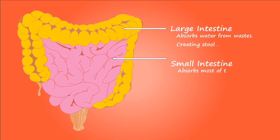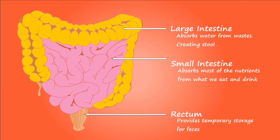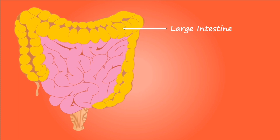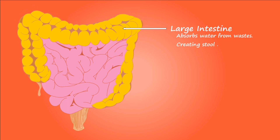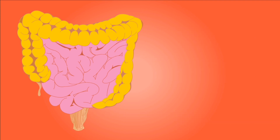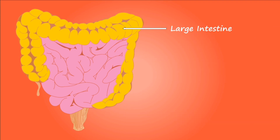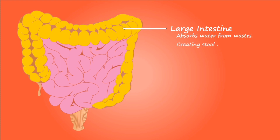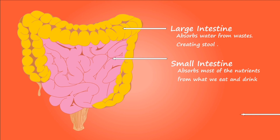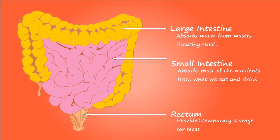The rectum continues from the sigmoid colon to the anal canal and has a thick muscular layer. It follows the curvature of the sacrum and is firmly attached to it by connective tissue. The rectum ends about five centimetres below the tip of the coccyx at the beginning of the anal canal. The last two to three centimetres of the digestive tract is the anal canal, which continues from the rectum and opens to the outside at the anus.